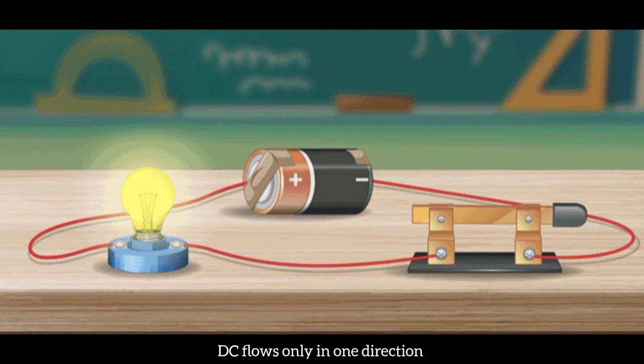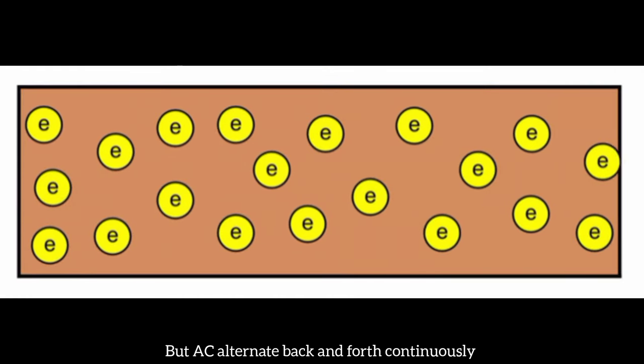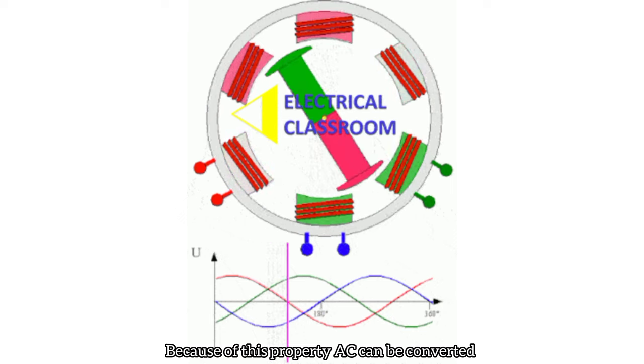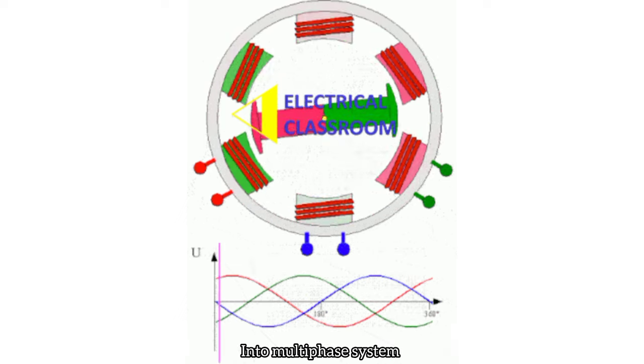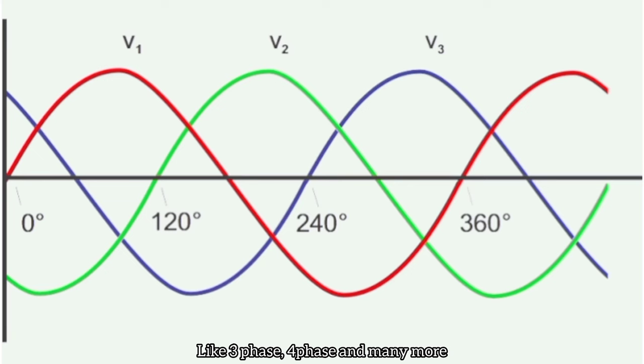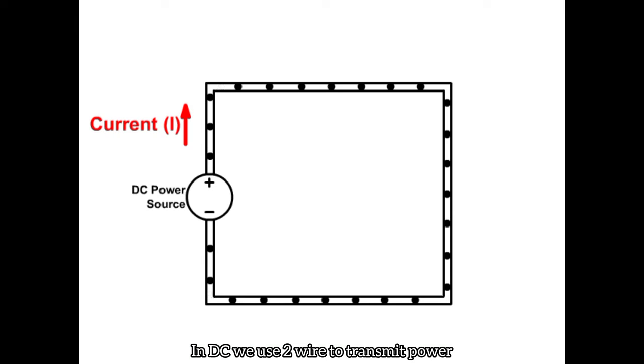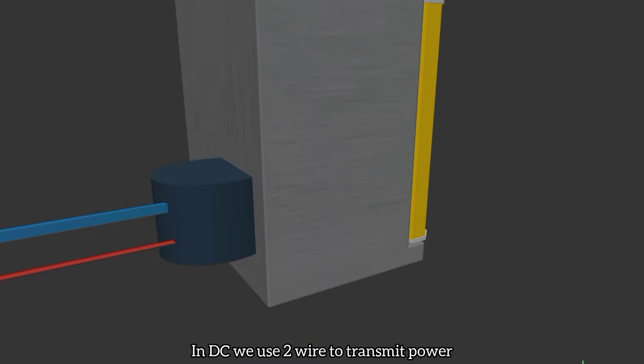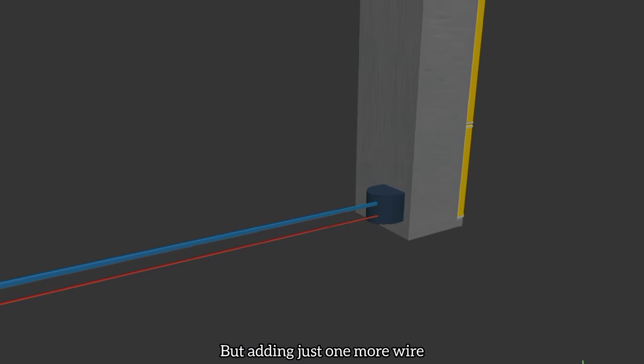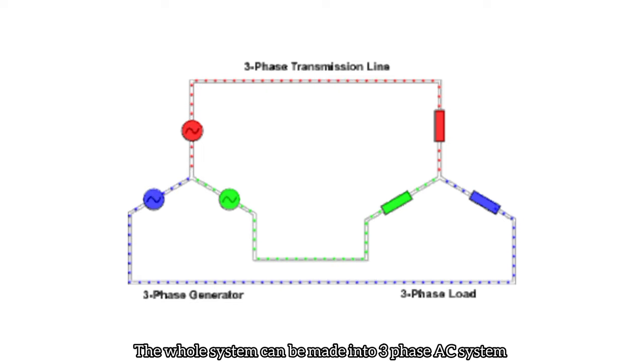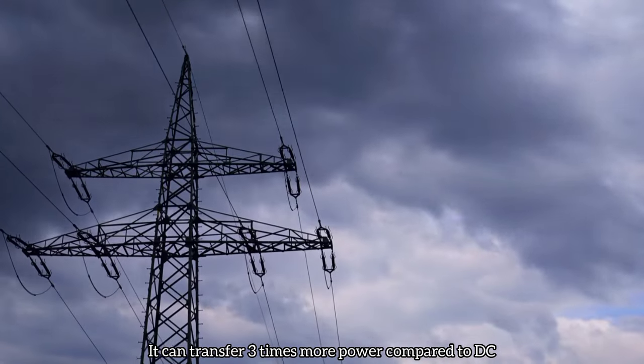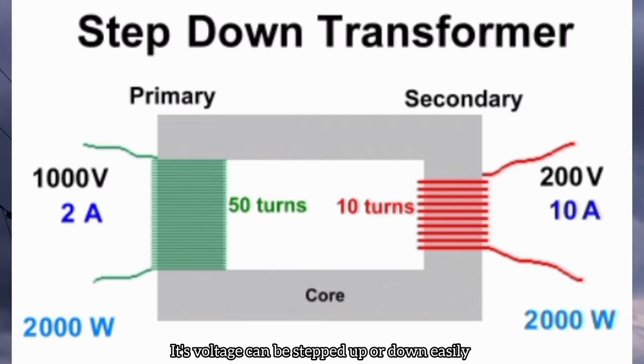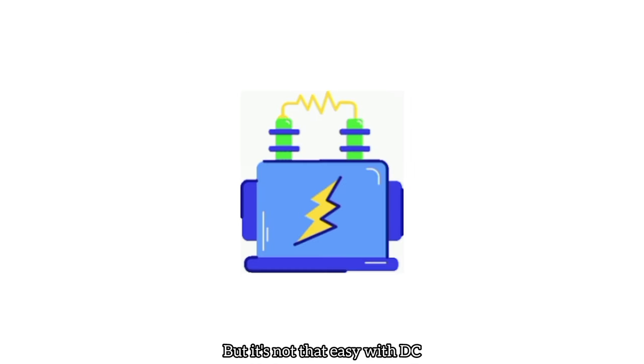DC flows only in one direction, but AC alternates back and forth continuously. Because of this property, AC can be converted into multi-phase system, like 3-phase, 4-phase, even more. In DC, we use two wires to transmit electrical power. But adding just one more wire, the whole system can be made into 3-phase alternating current system. It can transfer 3 times more power compared to DC. Its voltage can be stepped up or stepped down easily by using a simple transformer. But it's not that easy with DC.